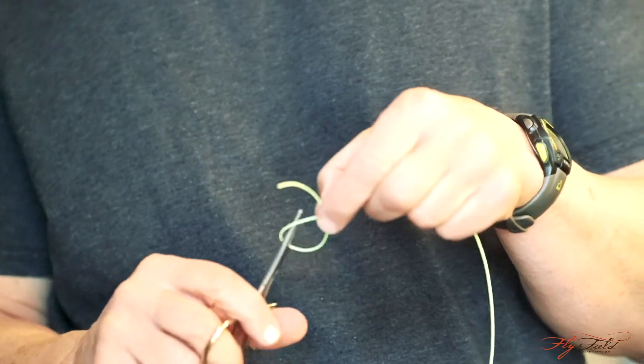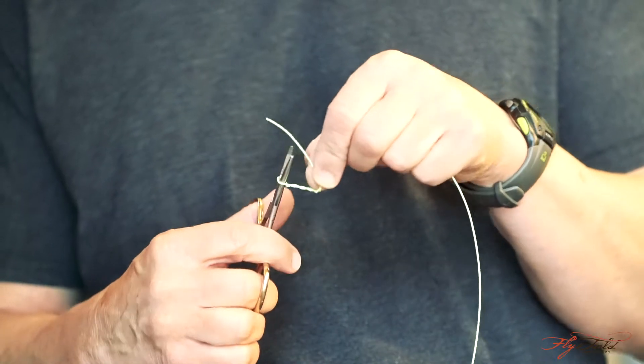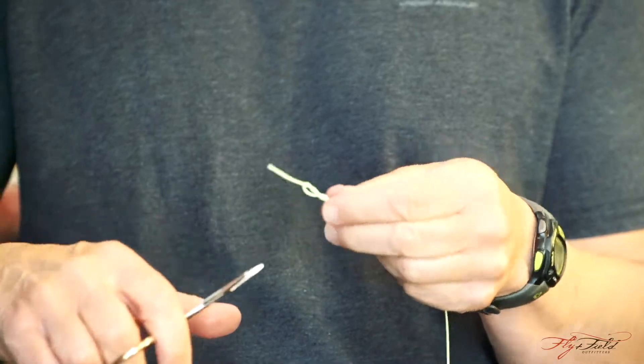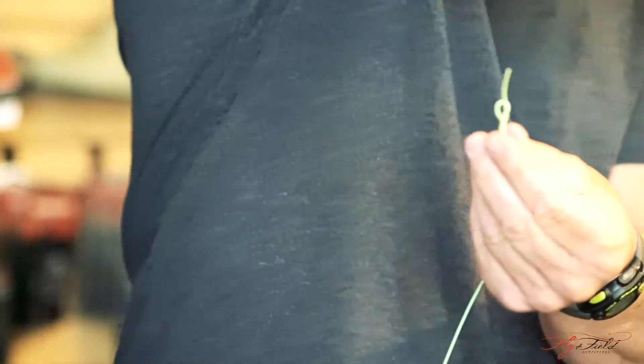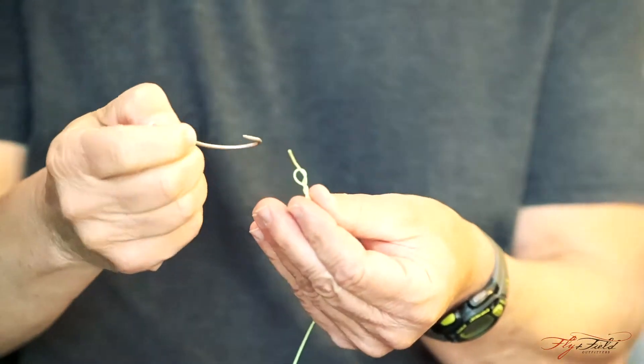Once you get that loop formed, you just simply take your hemostats, wrap it in there, go around five times, grab the tag end and then you pull that through. What you've got basically is a standing clinch knot and the hole's already here for you.